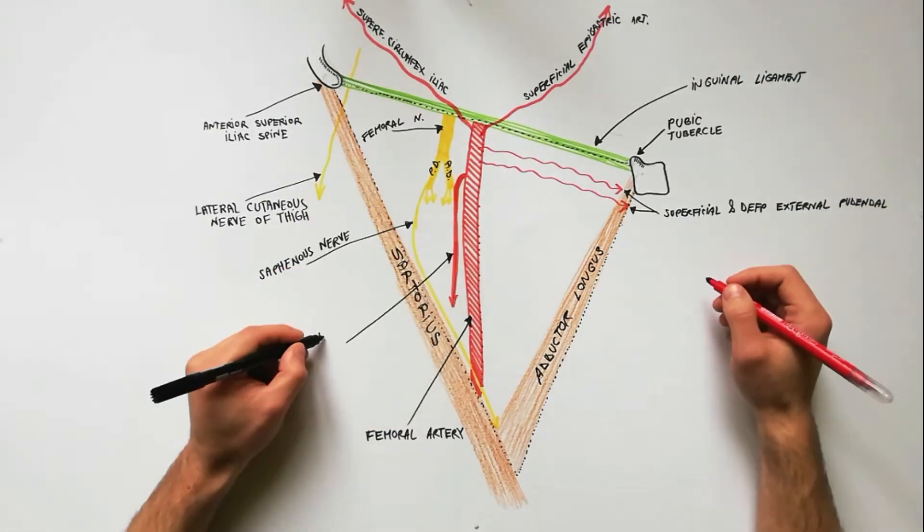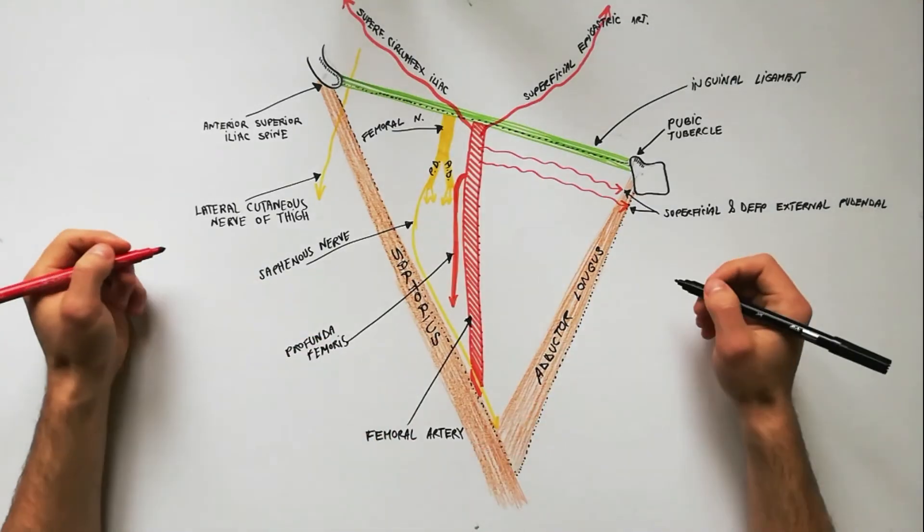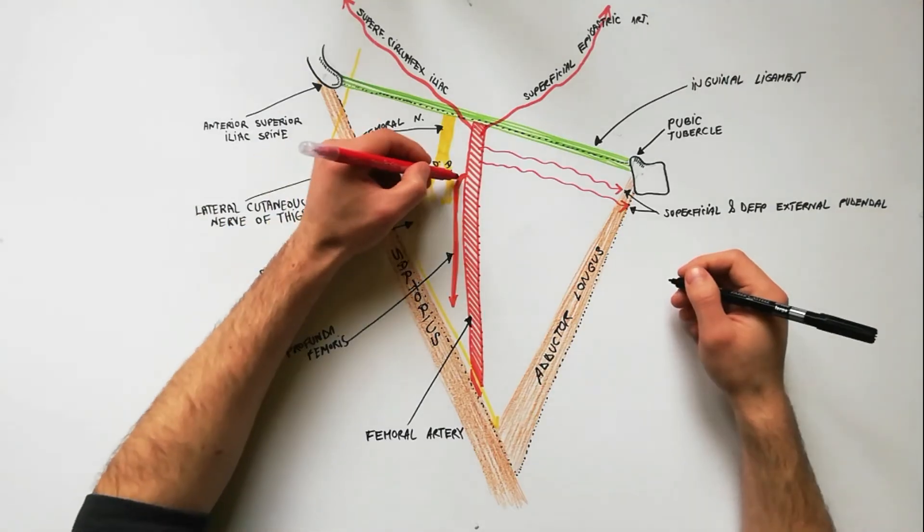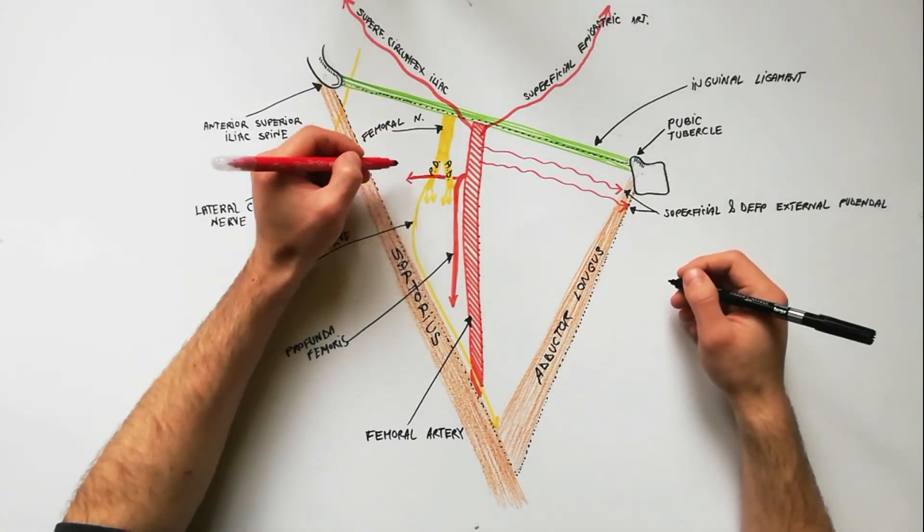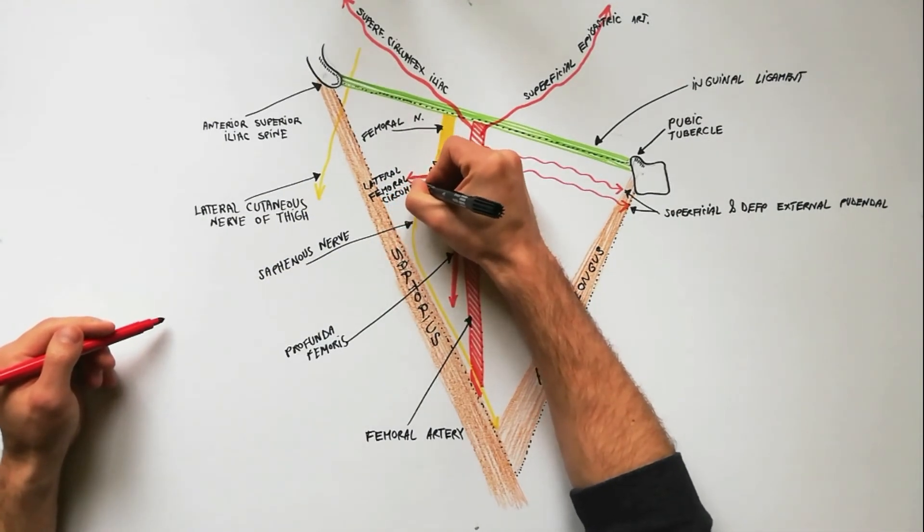The profunda femoris artery also arises from the femoral artery at the level of the femoral triangle. One of the branches of profunda femoris is the lateral femoral circumflex artery, which passes between the two divisions of femoral nerve.